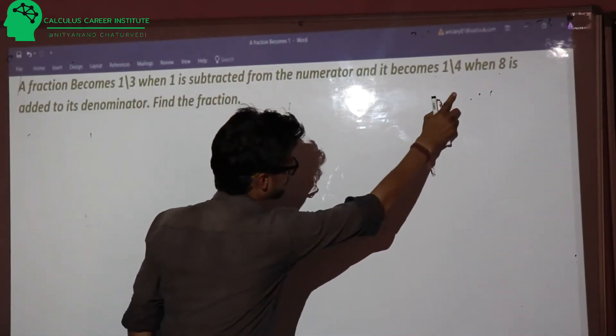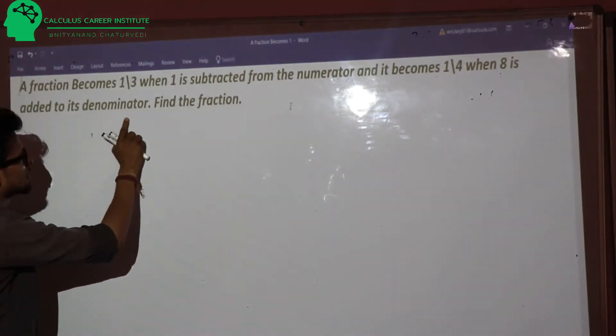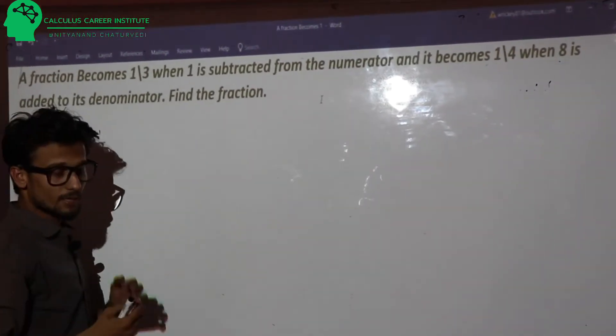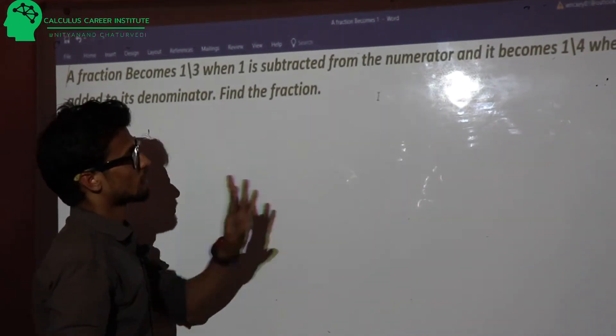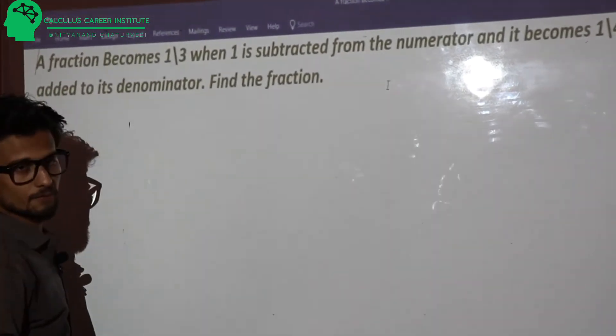And it becomes 1 by 4 when 8 is added to its denominator. So if you have 8 added to the denominator, it will become 1 by 4. Find the fraction.